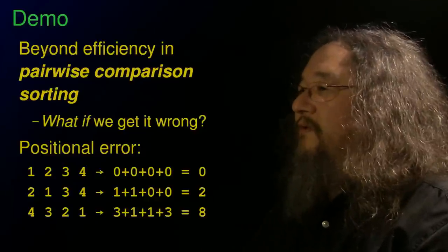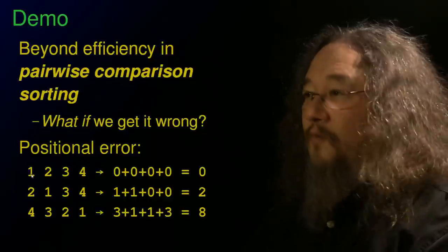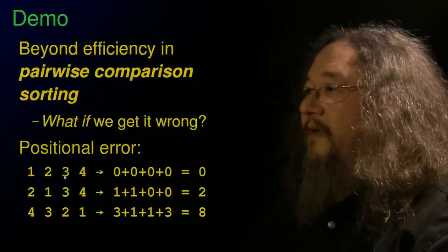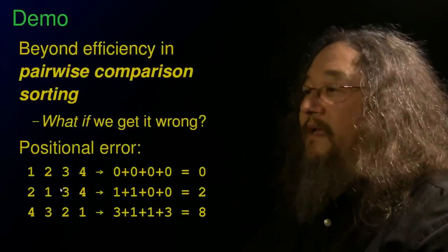And so the idea is if we were sorting just these few numbers, one, two, three, four, and those are in correct order. One is where it's supposed to be, two, three, and so on. So one is off by zero positions, two is off by zero positions, and so on, they all add up.